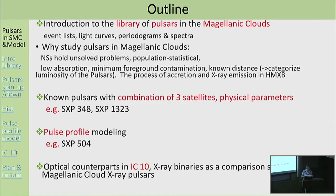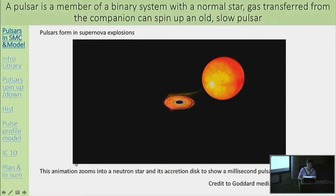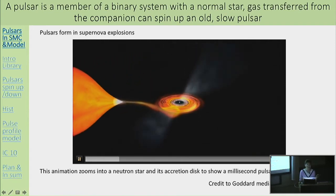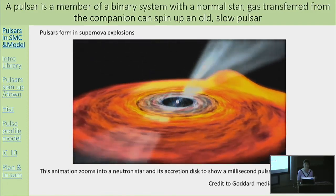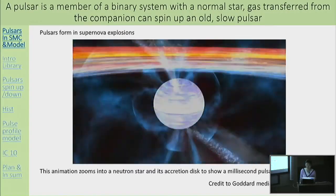I will give two examples of archival products with three satellite combinations: SXP348 and SXP3023. I'll also show an example of pulse profile modeling for SXP504, and introduce pulsar candidates found in IC10 to form a comparison sample for the Magellanic Cloud X-ray pulsars. Pulsations result from the rotation of the magnetized neutron star, and the modulation arises from its binary orbit. A pulsar is a member of a binary system with a normal star; gas transfer from the companion can spin up an old, slow pulsar.